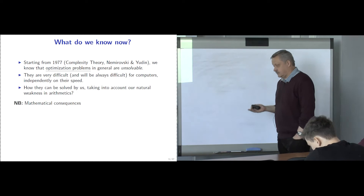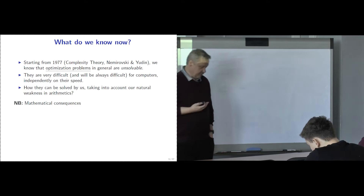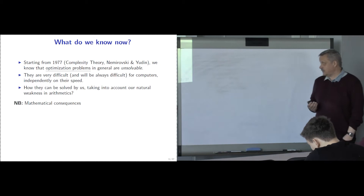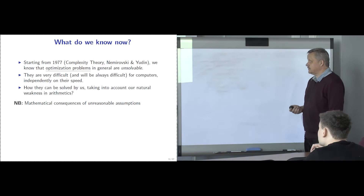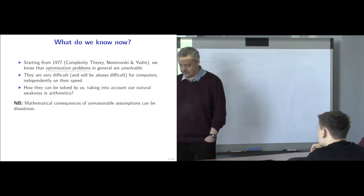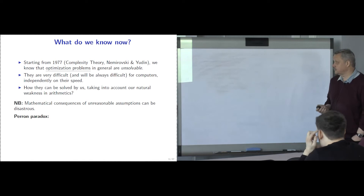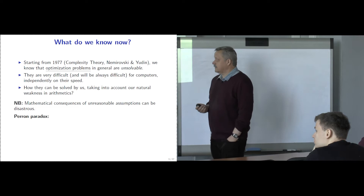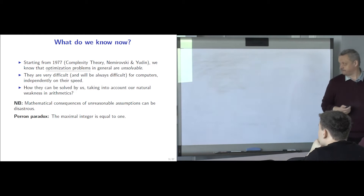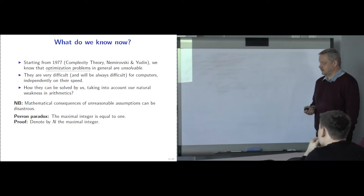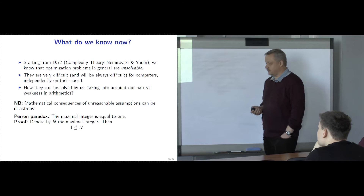Note that homo economicus was introduced in order to develop a kind of mathematical theory — to be able to prove some theorems. In mathematics, the consequences of unreasonable assumptions can be disastrous. This was well understood by the fathers of mathematical economics. For example, Perron developed a mathematical paradox which tells us that the maximal integer is equal to 1. The proof: denote by n the maximal integer. Then 1 is a maximal integer, therefore 1 is smaller than n.